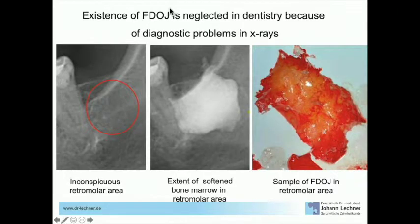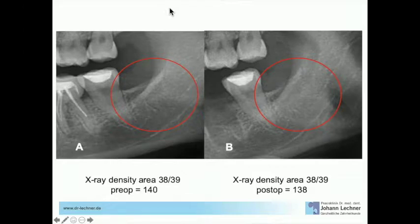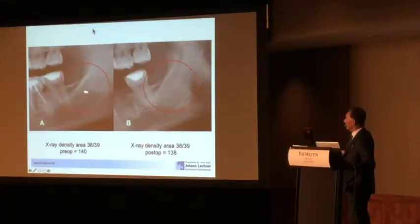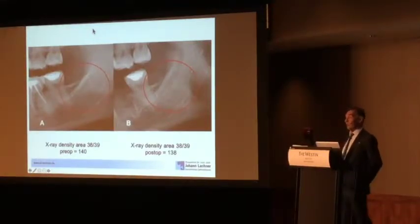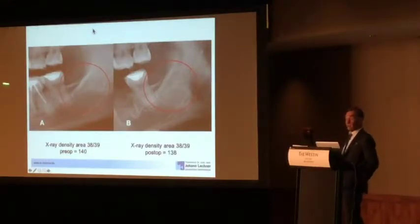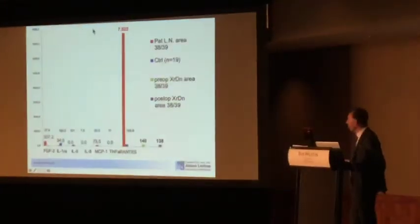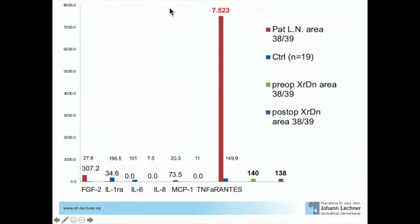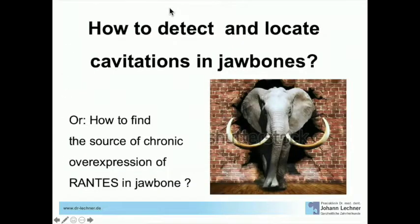Here you see one of these areas with a fat sample. We cleaned the bone, took out a huge lump of fat-degenerated jawbone, and immediately after surgery made another OPG — and there is no difference on the two-dimensional x-ray. They would say: 'Doctor, you're charging the patient for a surgery but you didn't do anything — you're betraying the patient.' But on the other hand, measuring the RANTES contents here, we get 7,523 picograms per milliliter.